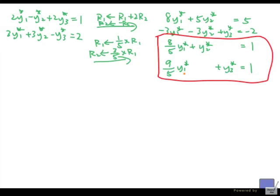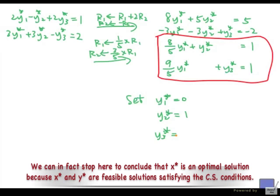So now let's stare at this. If I set y1 star equal to 0, then y2 star and y3 star can be set to 1 and both are non-negative. So set y1 star to 0, y2 star to 1, and y3 star to 1.